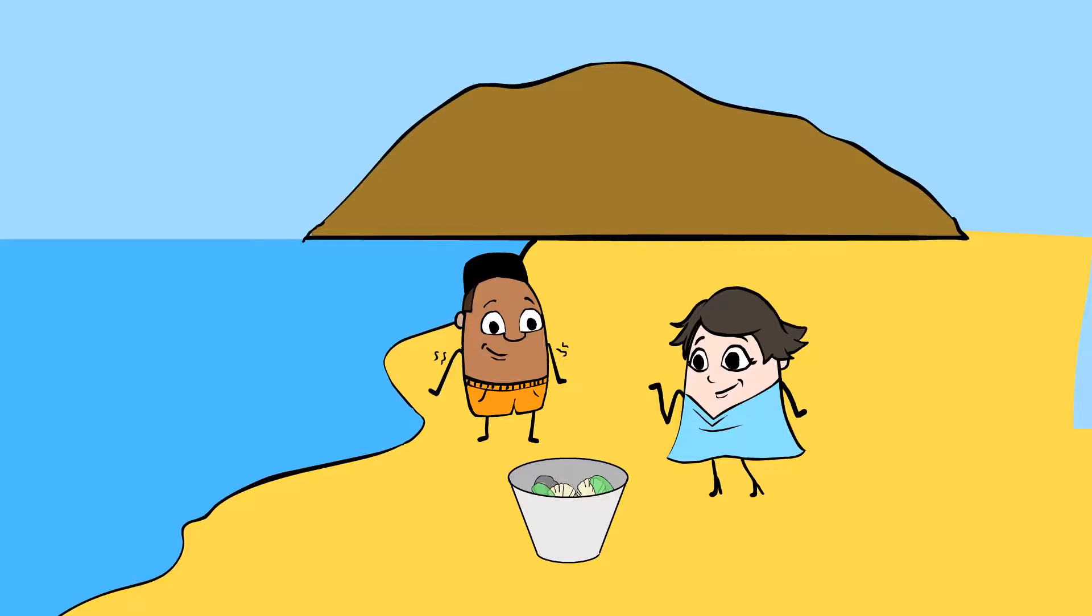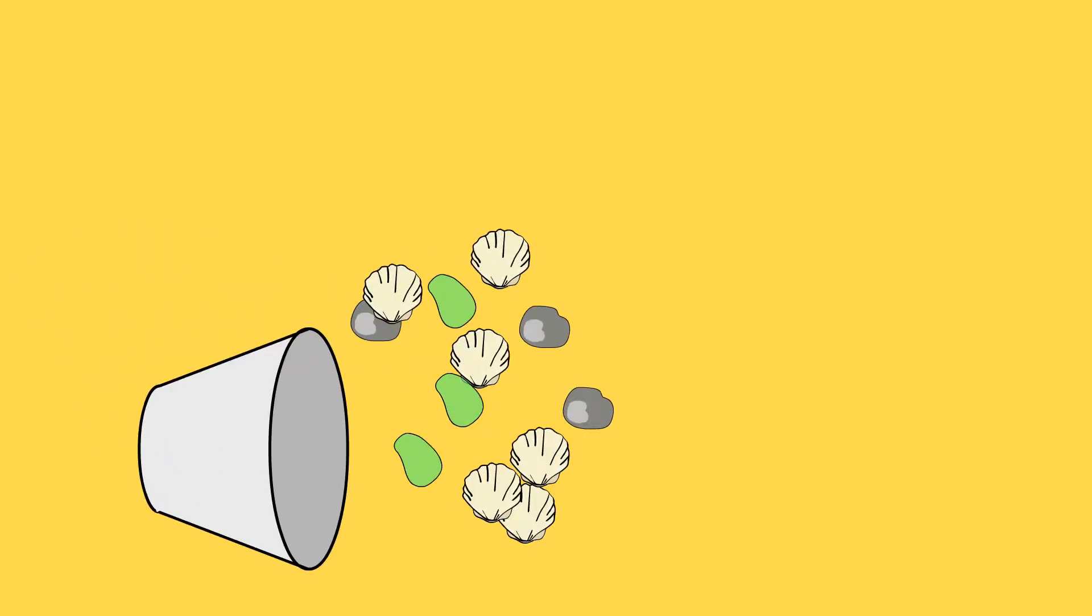I want to help Mia and her friends sort everything out. You want to help? We can make a pile of rocks, a pile of shells, and a pile of sea glass. Okay, let's grab this. It's a shell. And we can put that over here. And what's next? A piece of sea glass.